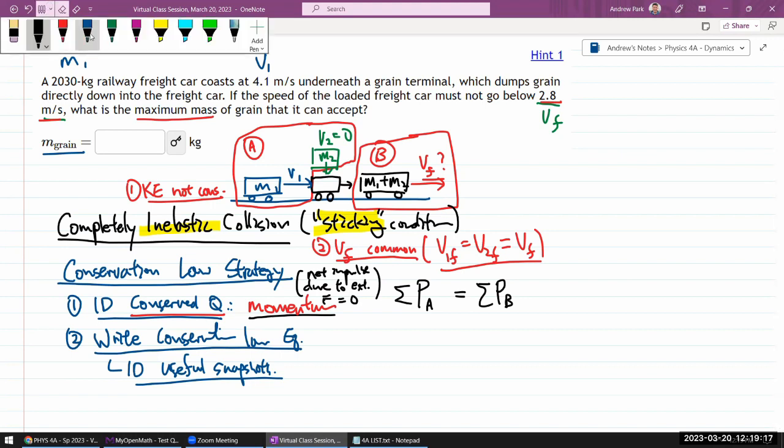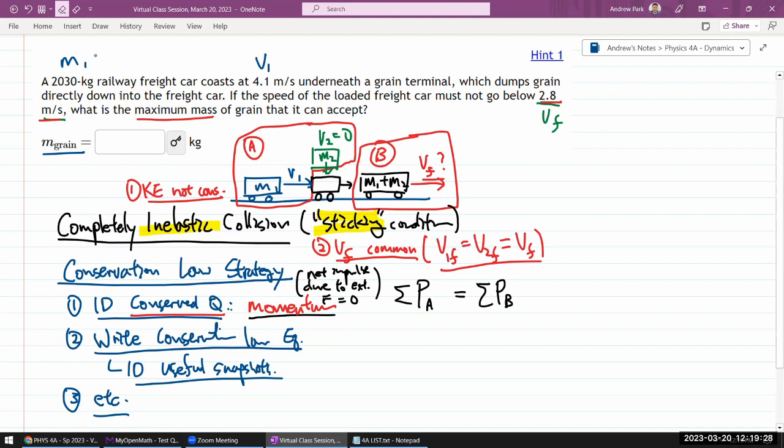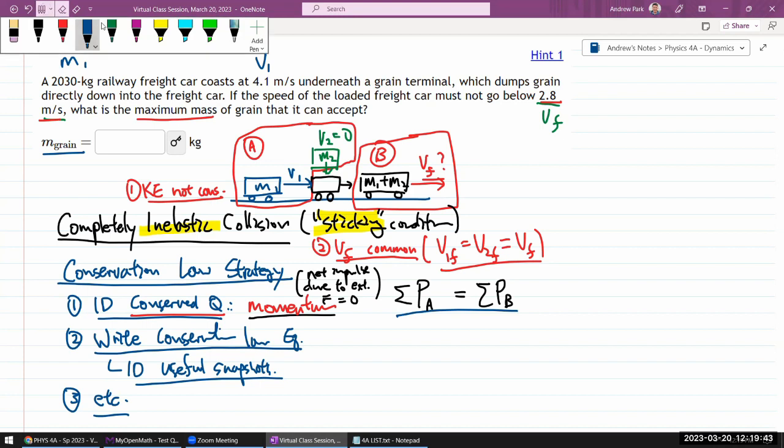So after having written down this equation, for step number three, I'll just say et cetera. It's kind of, once you've written down the equation you are starting with, then the next few steps should follow naturally. So you are trying to write down the total momentum, okay? So you go into, all right, what are my components, constituents for the momentum?